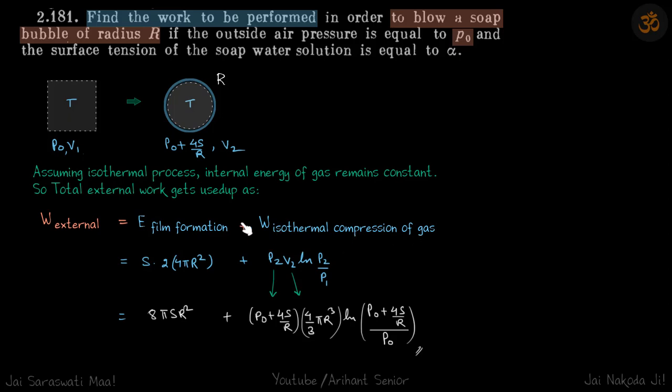So energy of film formation will be surface tension times total area, so S times twice of 4πr² - twice because it's a bubble, so the surface area will also be twice. And we know work done in isothermal compression is p₂v₂ln(p₂/p₁).